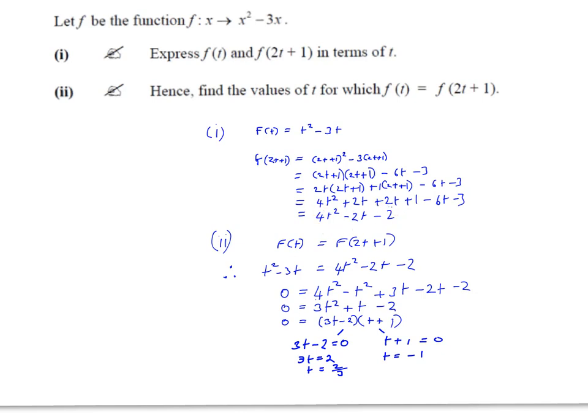So the second question tells us hence find the values of t for which f(t) is equal to f(2t+1). Now whenever you see the word hence, you should be thinking I need to use my answer from this to help me solve this.